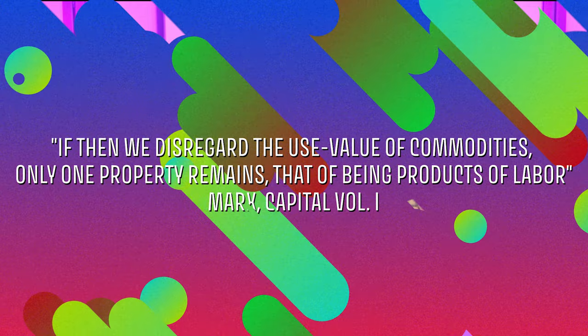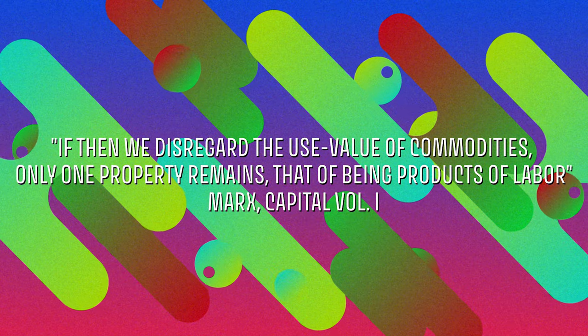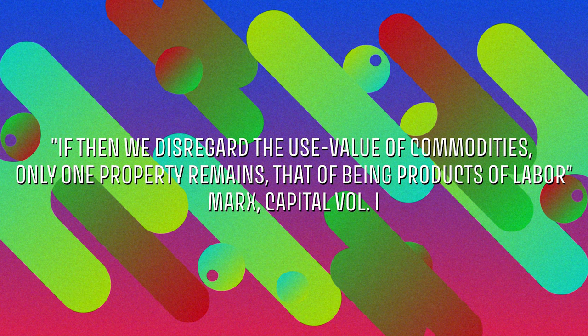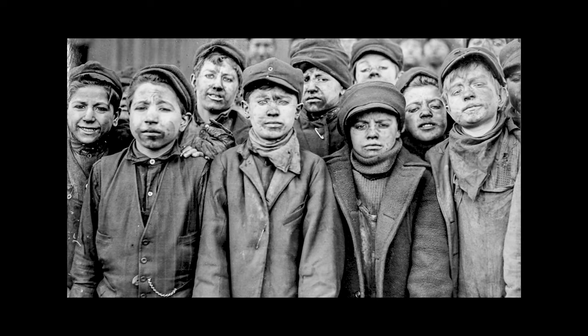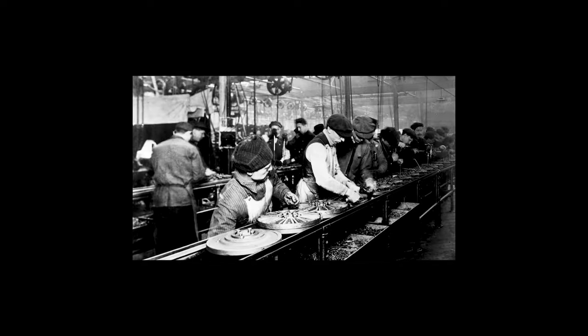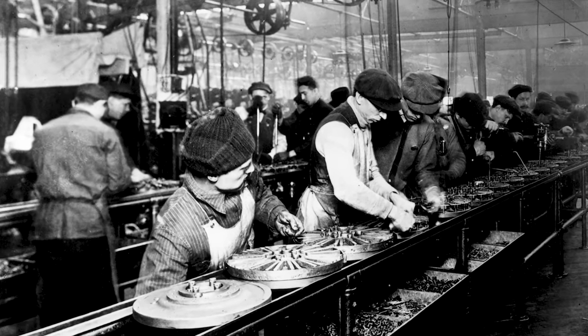He answered: if then we discard the use values of commodities, only one property remains — that of being products of labor. In other words, once we abstract away from the useful or tangible properties of a commodity, the only factor remaining in common that can explain why commodities exchange the way they do is the fact that they were created by human labor.